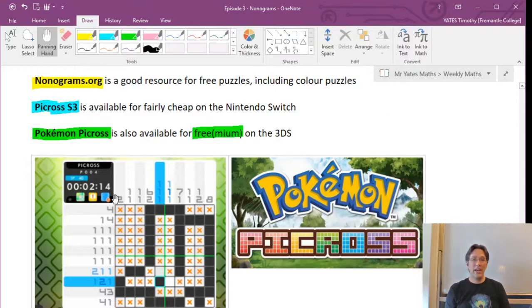That one's sort of, they gate your progress by only letting you cross off a certain number of squares in a day. But, if you pay a bit of money, you can get that to be infinite and get full access to the game. That one's quite good because, as you go through it, you collect lots of Pokemon. And, as you collect those Pokemon, they give you extra abilities to solve other puzzles.